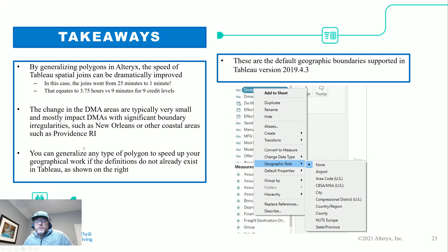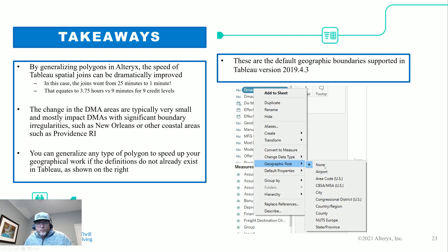You can generalize any type of polygon you might want to use in Tableau — custom regions, company-specific regions, and so on. Tableau already has natively supported geographic boundaries like CBSAs, MSAs, and airports, and if they're in there natively you get fast performance. But DMAs are not in there natively, which is why I had to do this.